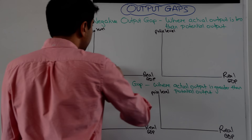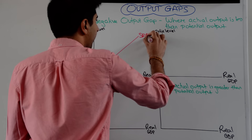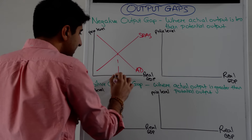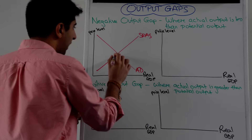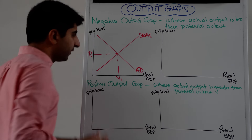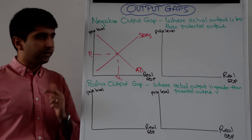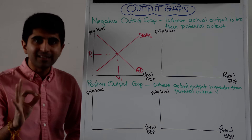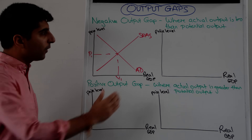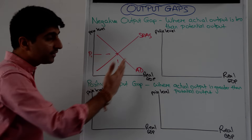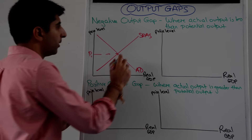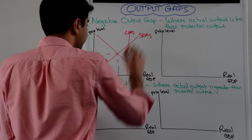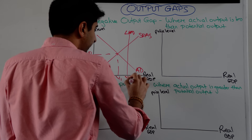Let's look at the classical interpretation and the Keynesian interpretation of what a negative output gap would look like. In the classical model let's draw AD and SRAS. Where they meet is the actual level of output at Y1 with a price level at P1, but crucially that output level is going to be less than the potential level of output. So LRAS is going to be to the right of this equilibrium. There is LRAS and there is YFE.